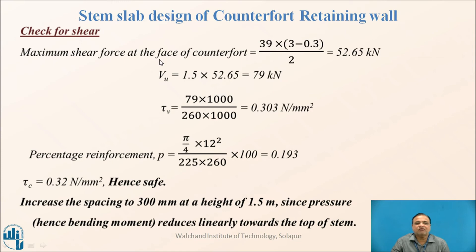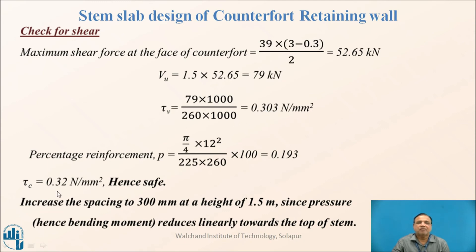Check for shear: Maximum shear force at the face of the counterfort is WL/2 = 39 × (3 − 0.3)/2 = 52.65 kN. Design shear force VU = 1.5 × V = 79 kN. Nominal shear stress τV = VU/(b×d) = 0.303 N/mm². Percentage steel provided (12 mm @ 225 c/c) = π/4 × 12² / (225 × 260) × 100 = 0.193%. From Table 19 of IS456, τC = 0.32 N/mm². Since τV < τC, it is safe and no shear reinforcement is required.